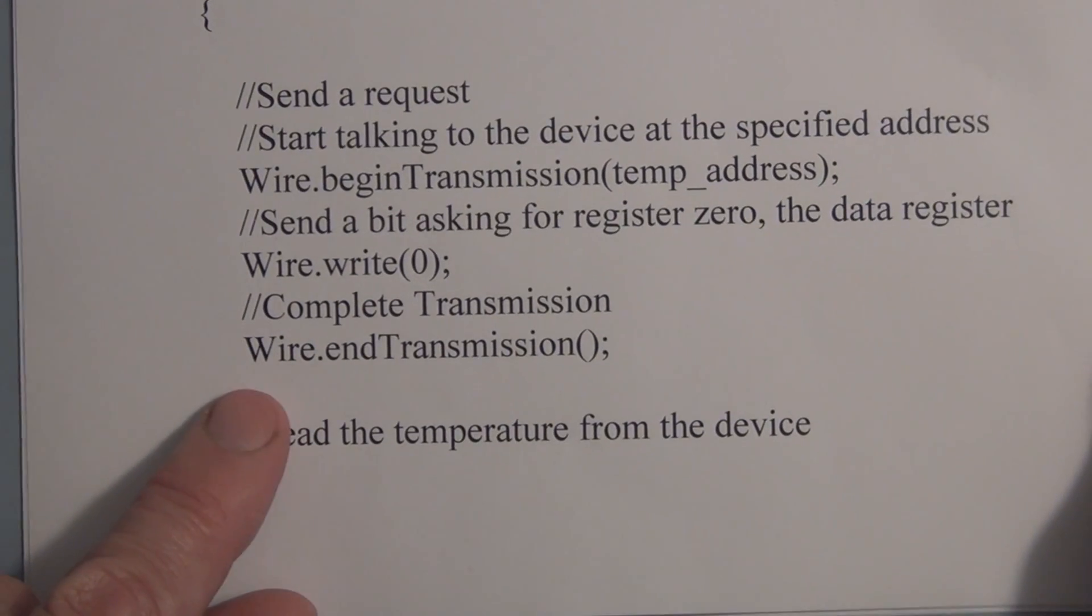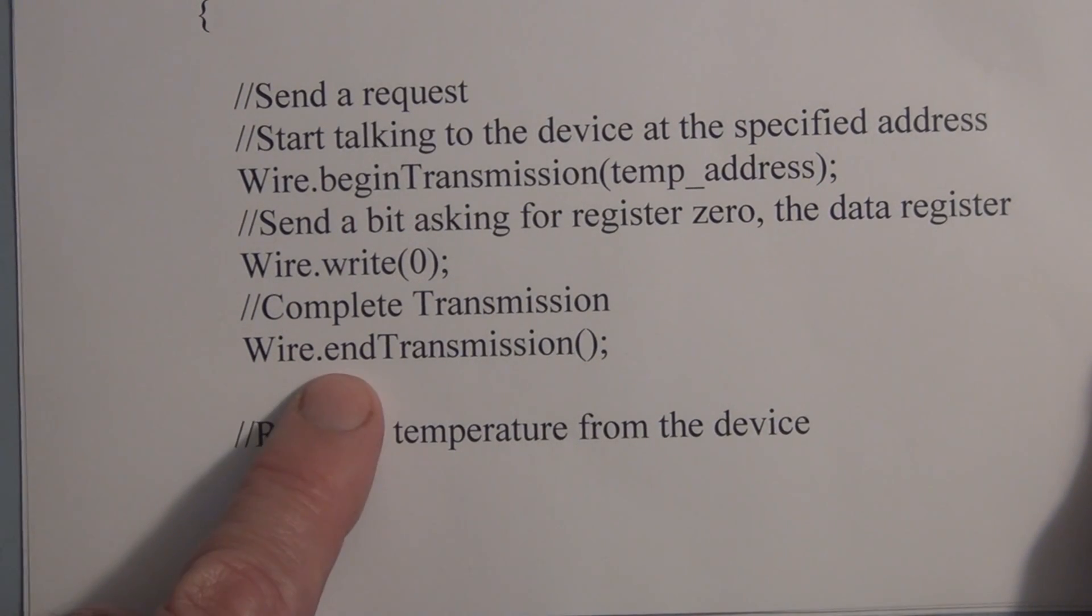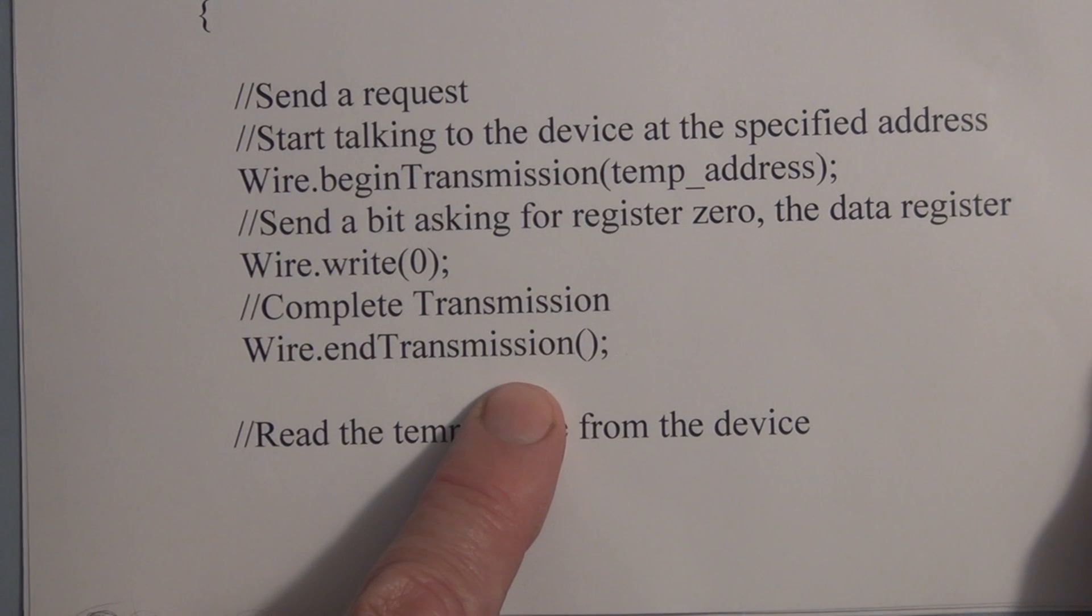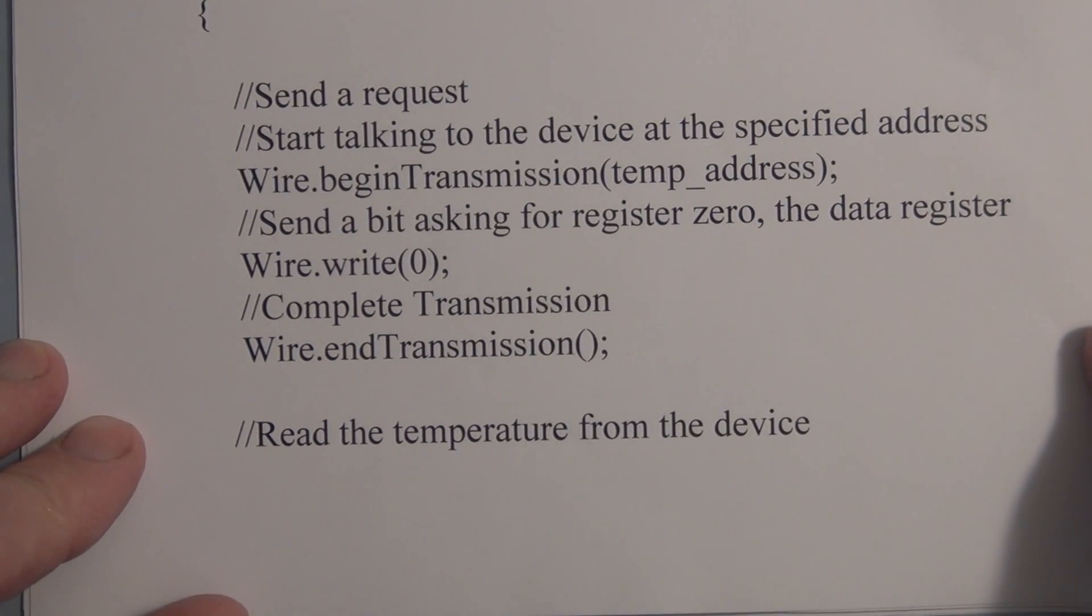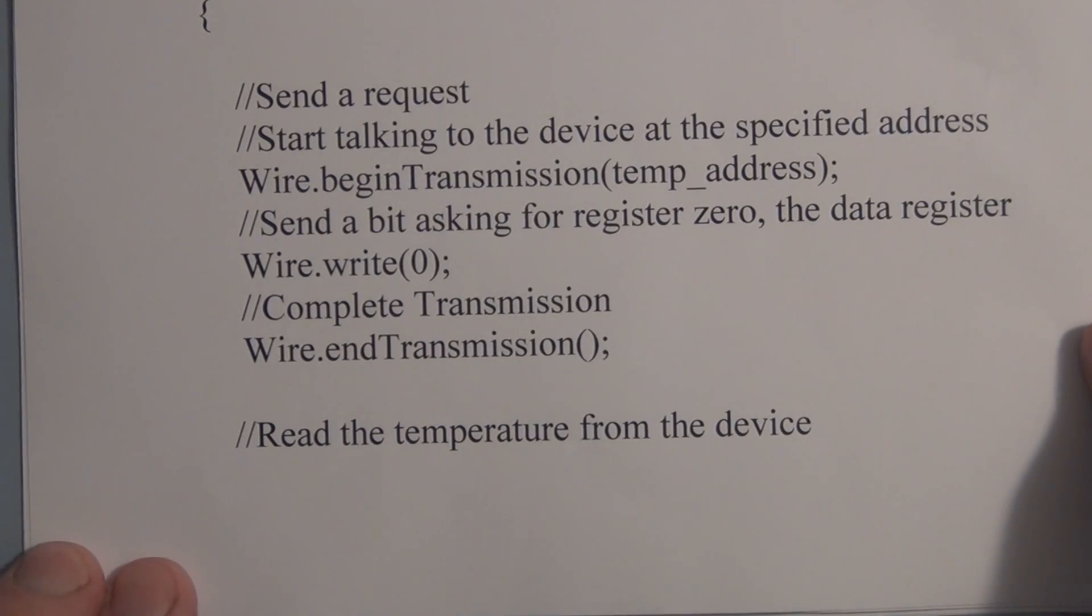And then we end communication at that point. We wire dot end transmission because we're now looking at that register. So now that we're looking at the register, we want to read information from that slave to the Arduino.